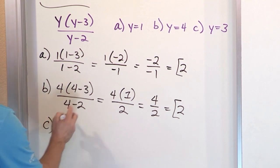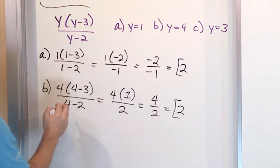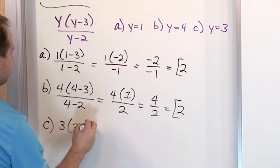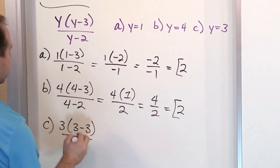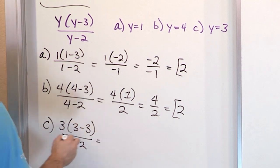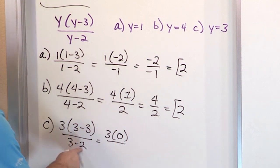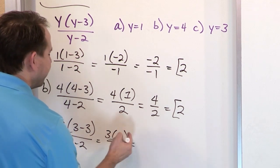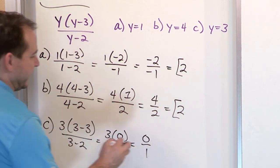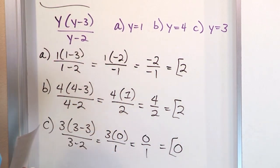For Part C, y is 3. We put it in: 3 times (3 minus 3) over (3 minus 2). On the top, 3 minus 3 is 0. On the bottom, 3 minus 2 is 1. So on the top, 3 times 0 is 0 over 1. What is 0 divided by anything? It always gives you 0. Final answer: 0.